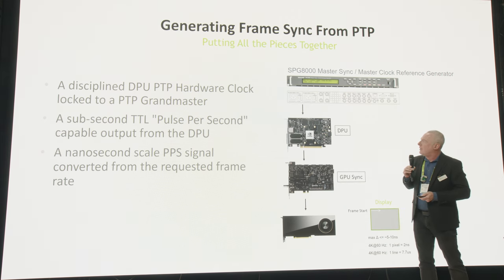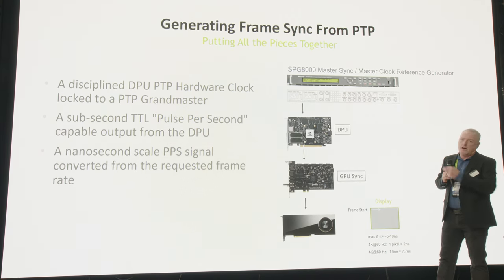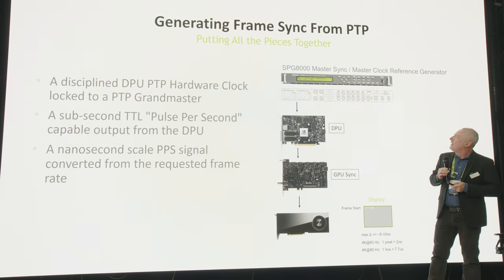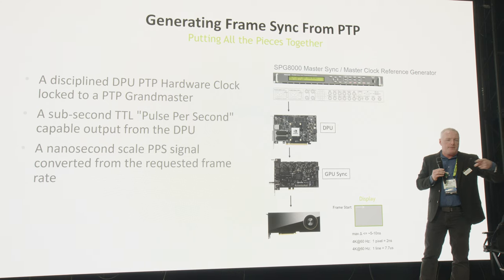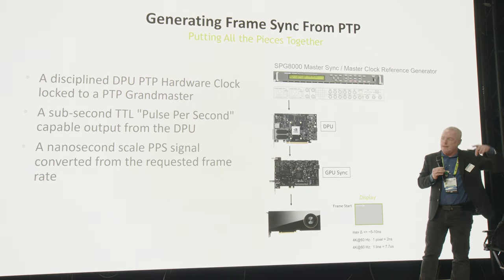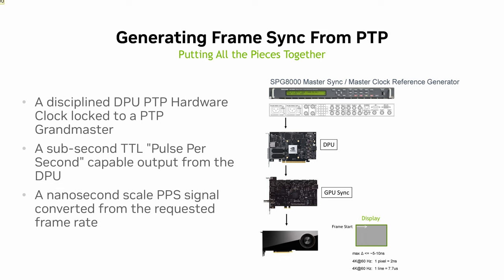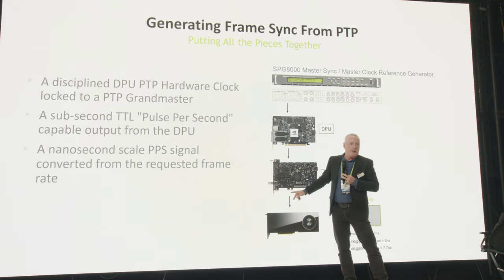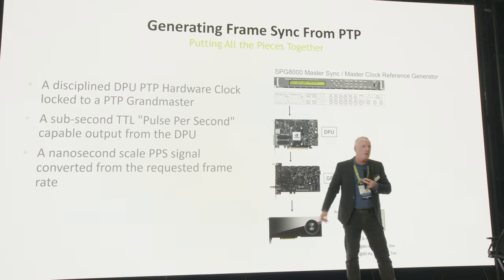The signal chain works as follows: the grandmaster takes PTP time from satellite and feeds it onto the network. It goes into the DPU, which has a BNC connector output that generates a pulse. That pulse feeds into the BNC connector on the Quadro Sync board — previously used with analog sync generators — so we can now drive the GPU with PTP-derived timing.